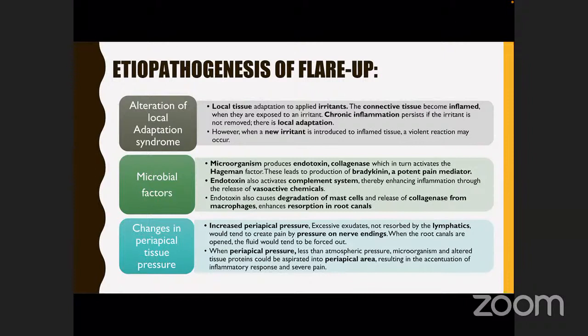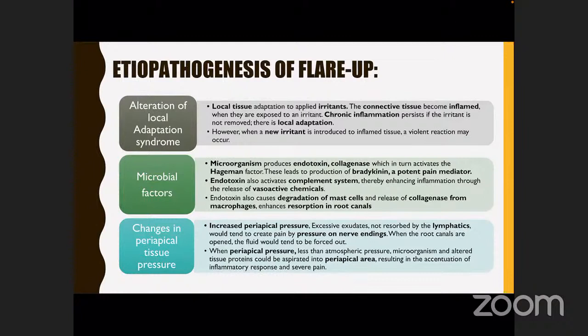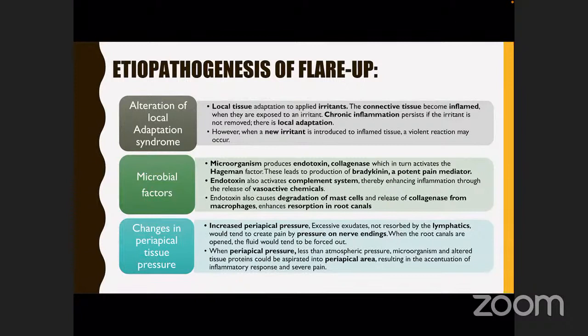Next is the microbial factor. Millions of microbes are present in the root canal and oral cavity. Some microorganisms produce endotoxins and collagenase, which activate the Hageman factor, leading to production of inflammatory mediators — potent pain mediators causing sharp shooting pain in flare-ups. Endotoxins also activate the complement system (C1 to C10), enhancing inflammation through vasoactive chemicals, and cause degradation of mast cells and release of collagenase from macrophages, enhancing root resorption.